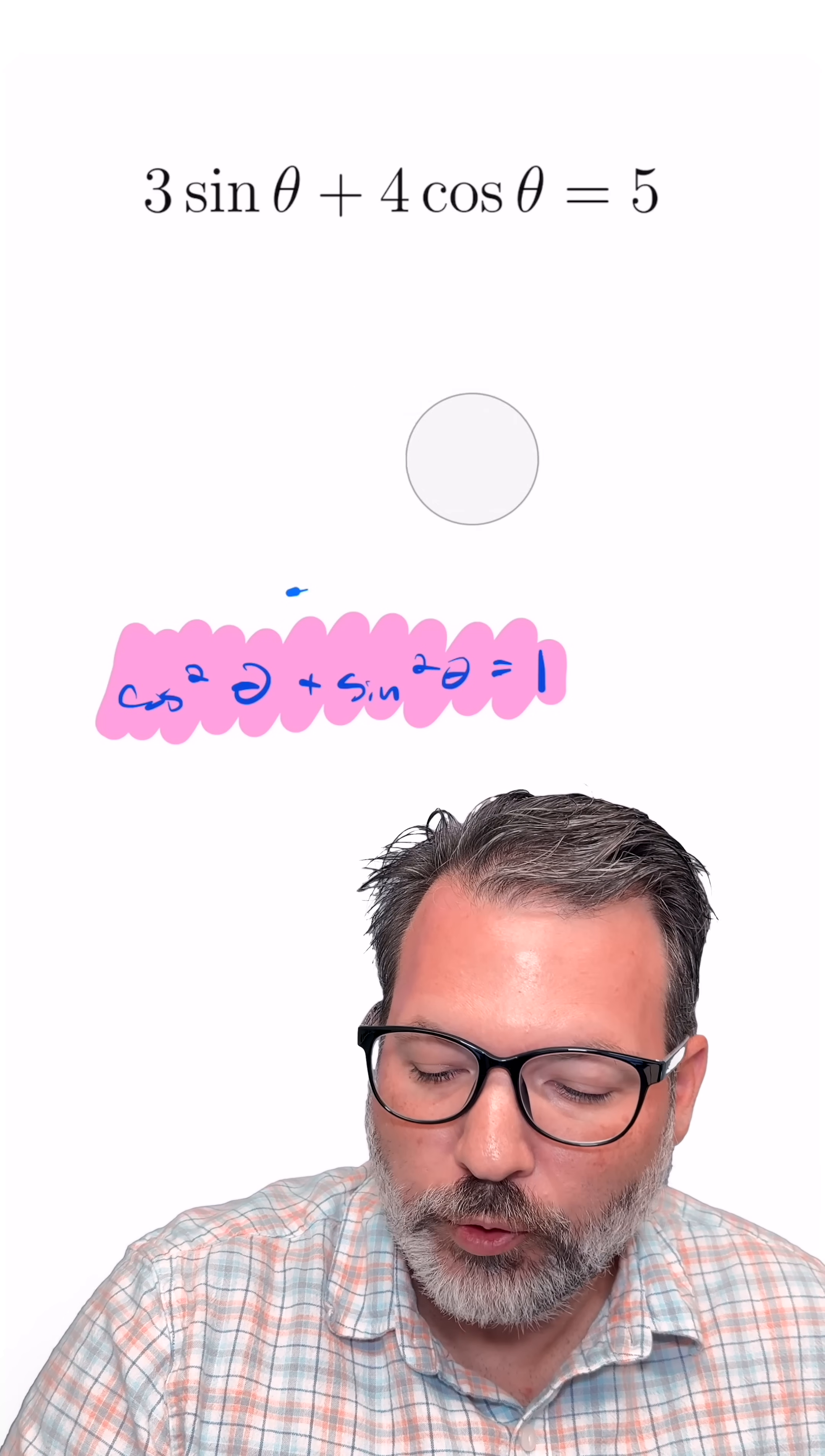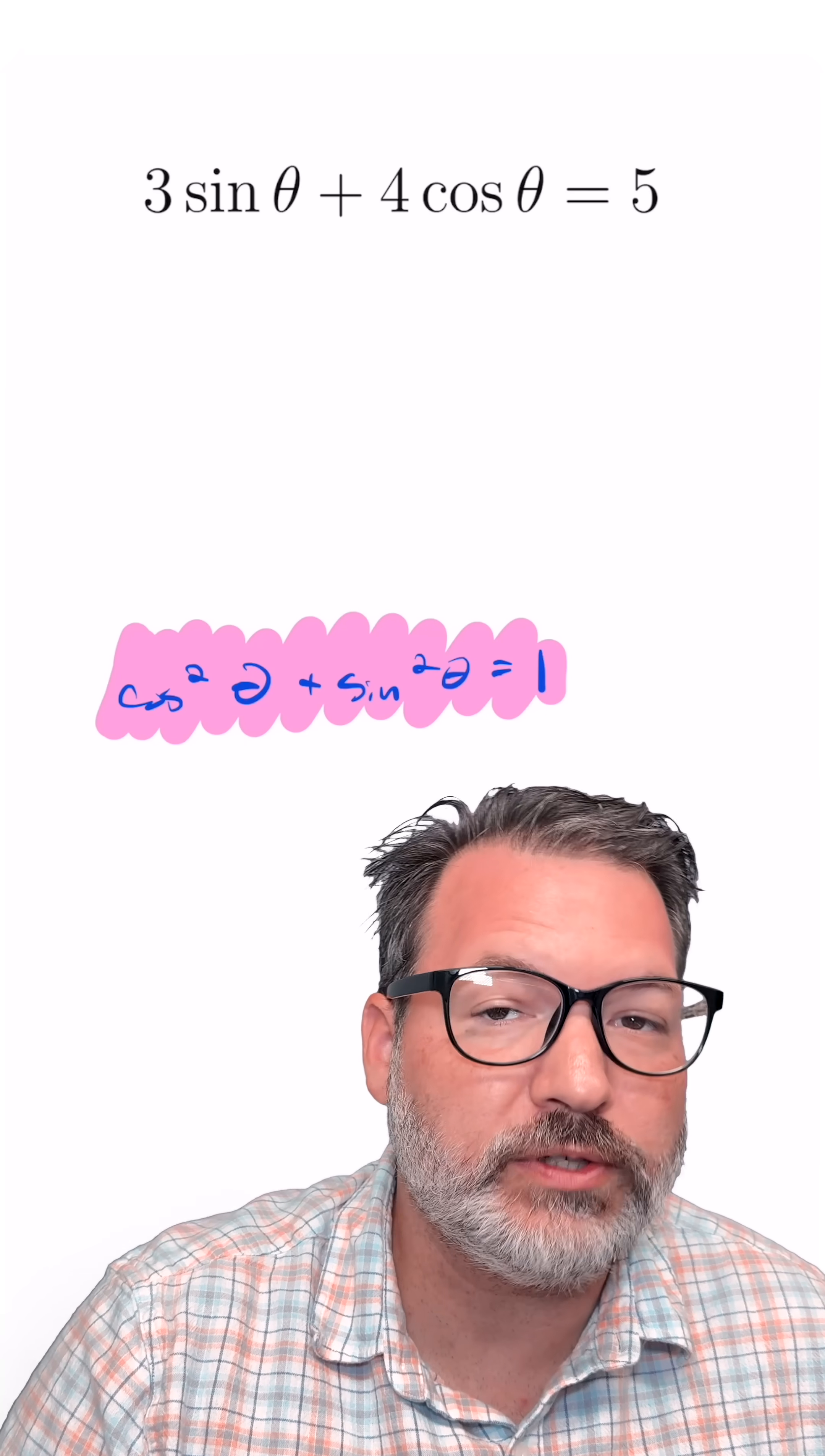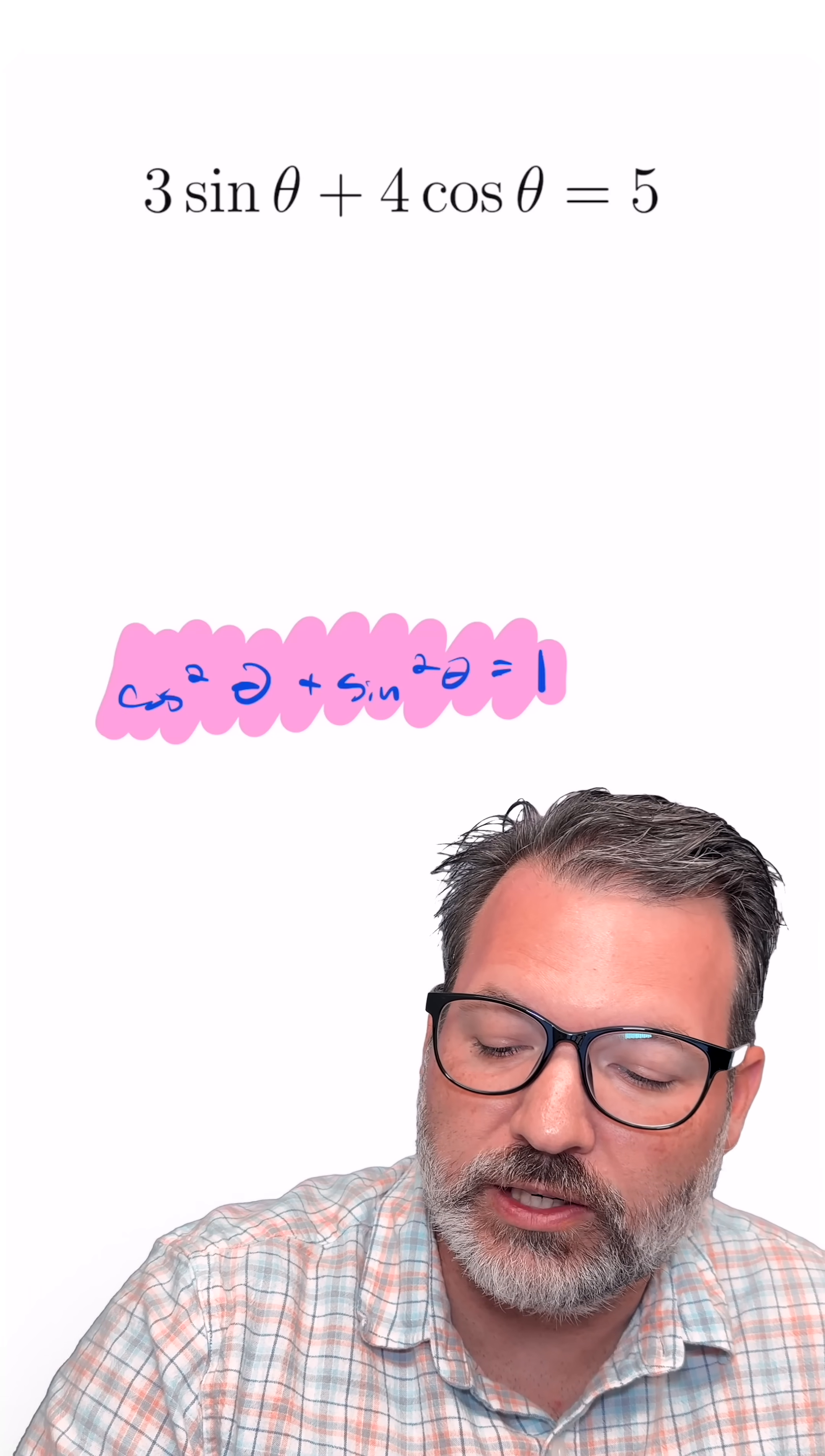Now, 3 sine theta plus 4 cosine theta definitely isn't the same thing as cosine squared theta plus sine squared theta, and 5 is not the same thing as 1. But that's actually the easier part to deal with because we can definitely turn a 5 into a 1.